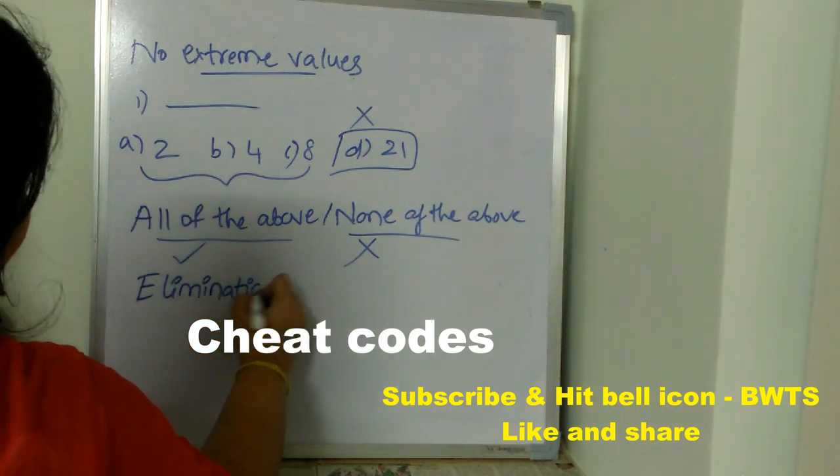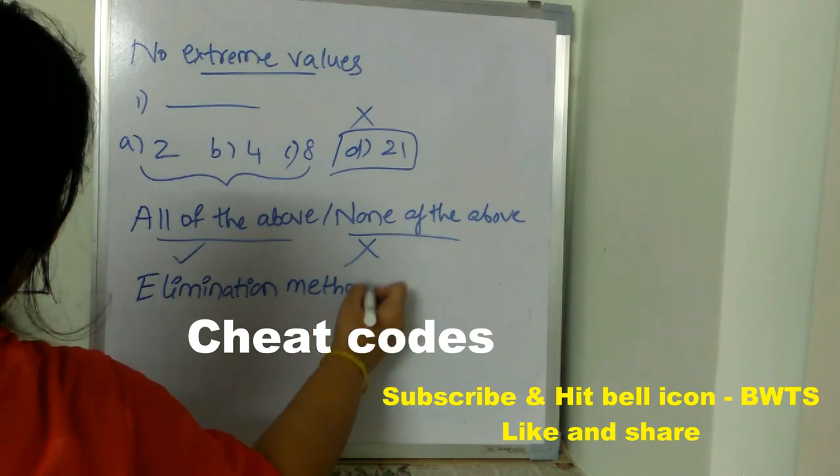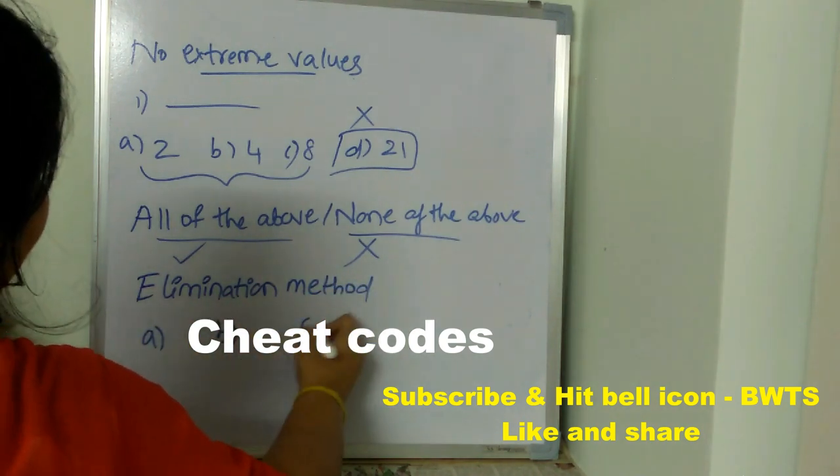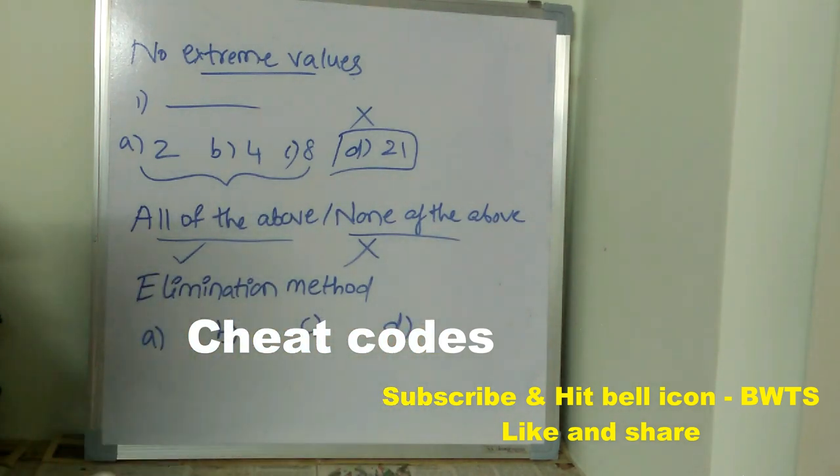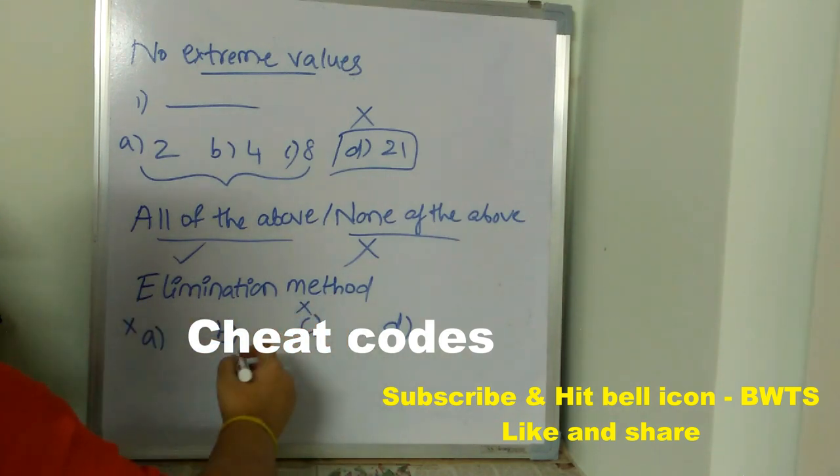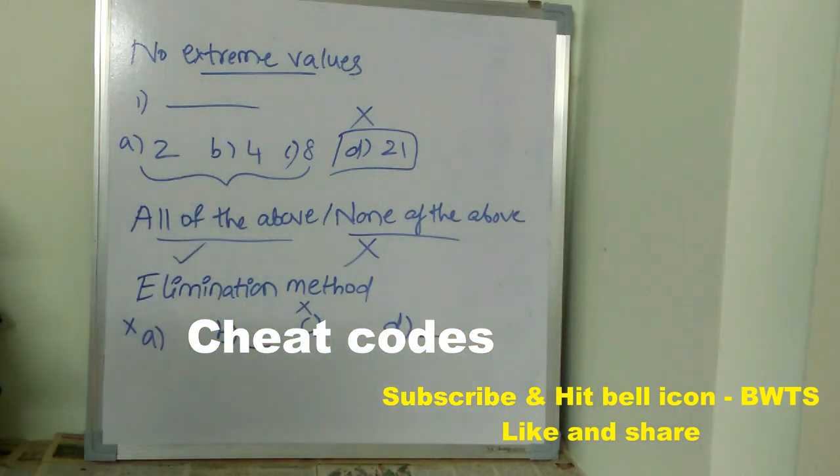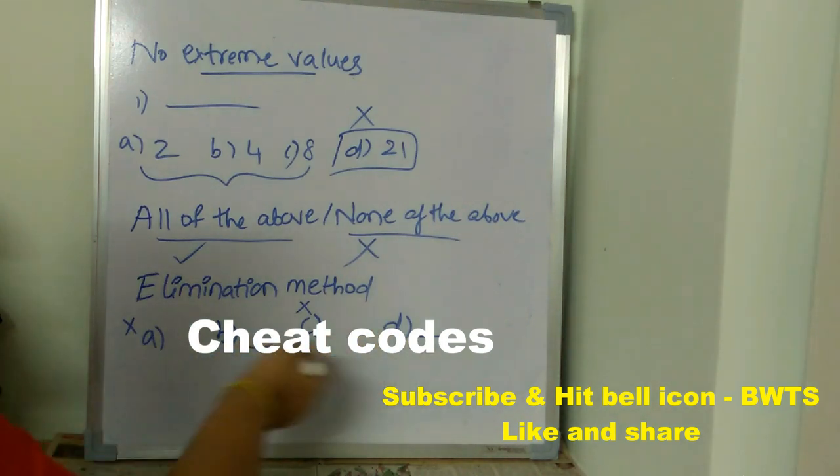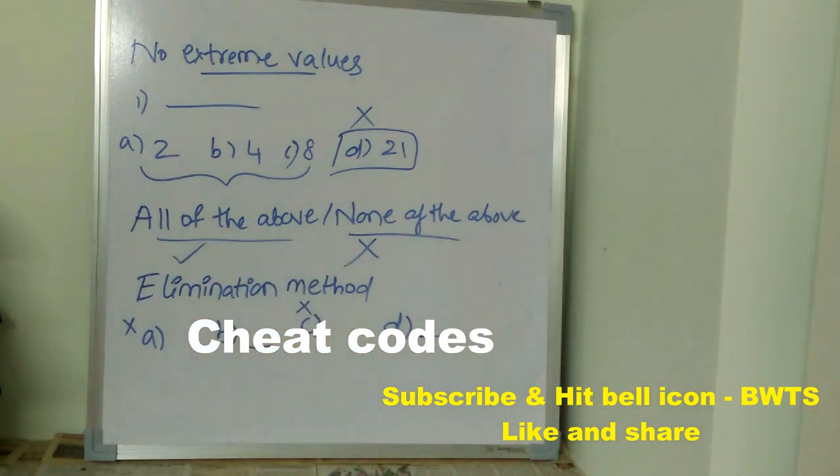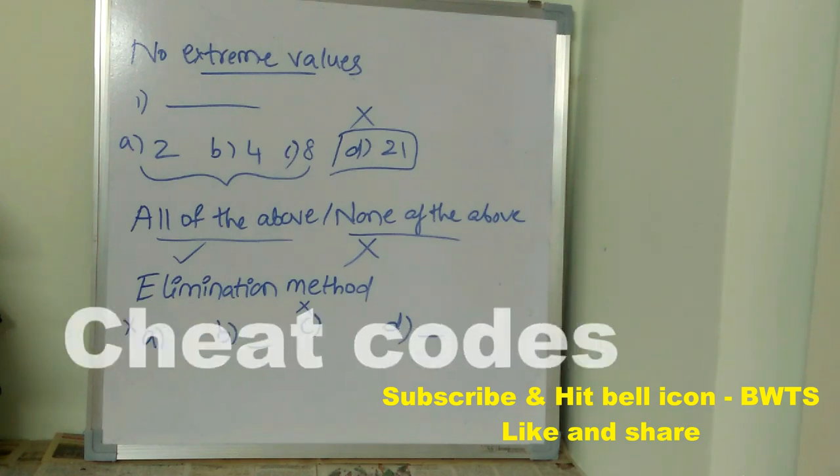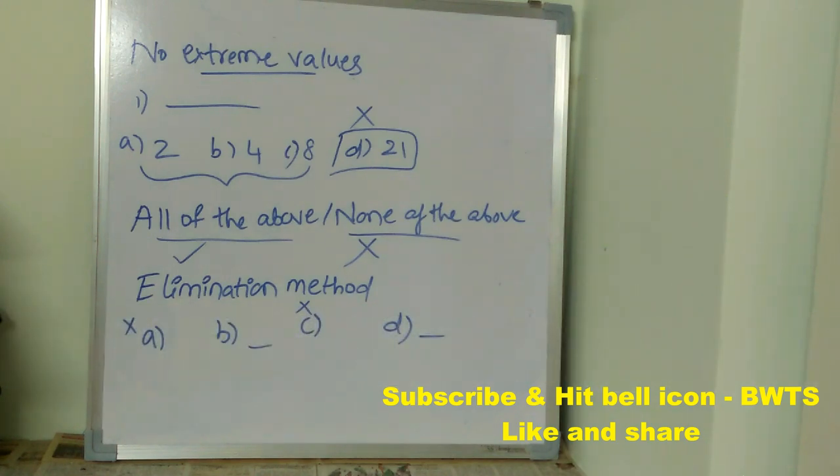Elimination method. What is elimination method? When you have four options, using your logic, using the concept which you know which is related to this question, try to eliminate the irrelevant options. Then out of four options, after eliminating the irrelevant options, you will be left with only two options. Then you can happily guess and put one of these options. This is called elimination method. Using your logic and your common sense and the concept which you know related to the question, just eliminate irrelevant options.